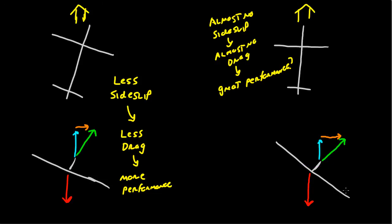So in this case, because you're banking so much, you've got no sideslip, almost no drag, but you don't get great performance because you don't have enough vertical lift to overcome weight in the first place.